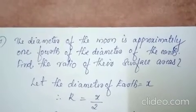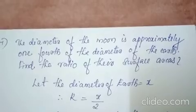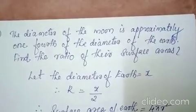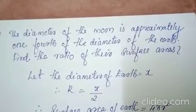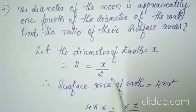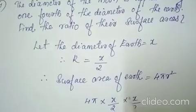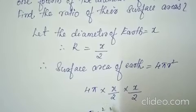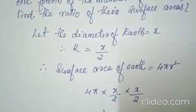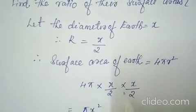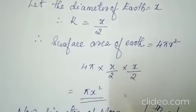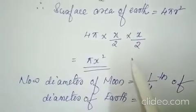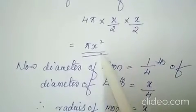The seventh question: the diameter of the moon is approximately one-fourth of the diameter of the earth. Find the ratio of their surface areas. Let the diameter of the earth be x, so the radius of the earth is x by 2. The surface area of the earth equals 4 pi into x by 2 into x by 2. After cutting the 2s, you will get pi x square.